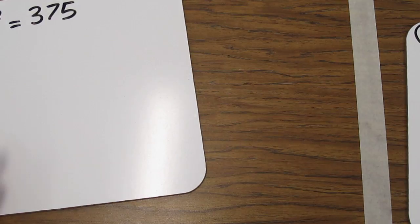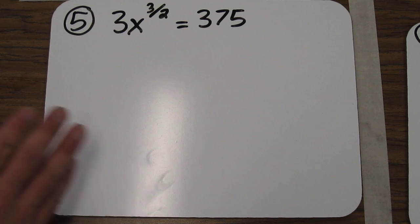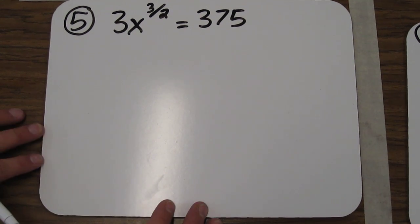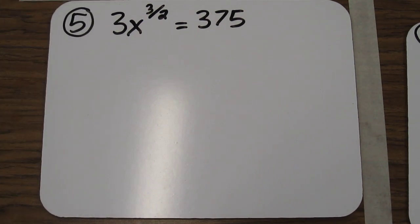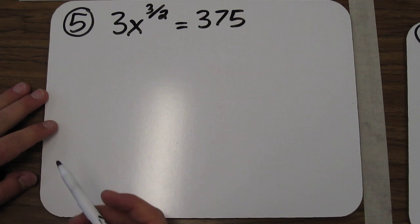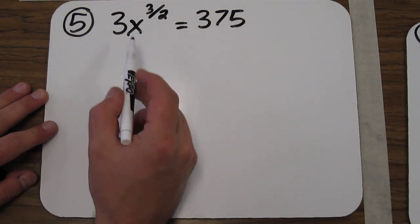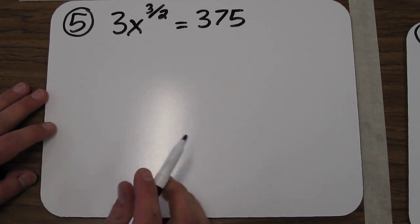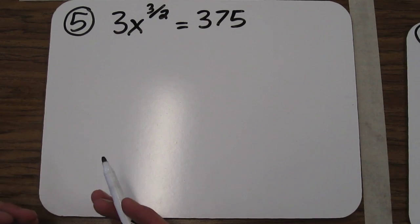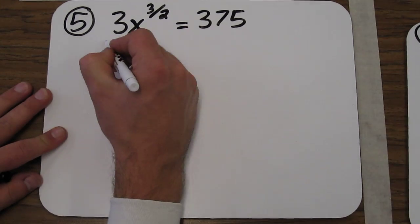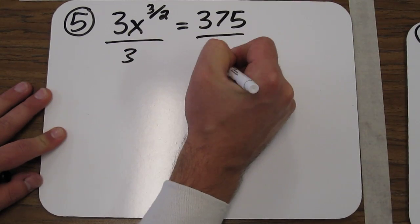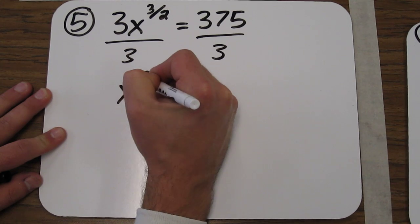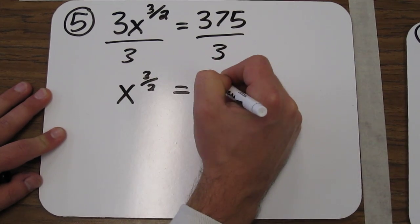Let's try another one. This time we have a fractional exponent. We have 3 times x to the 3/2 equals 375. We need to isolate the x and the 3/2. In other words, we're isolating the x with its exponent. If we divide both sides by 3, we're left with x to the 3/2 equals 125.